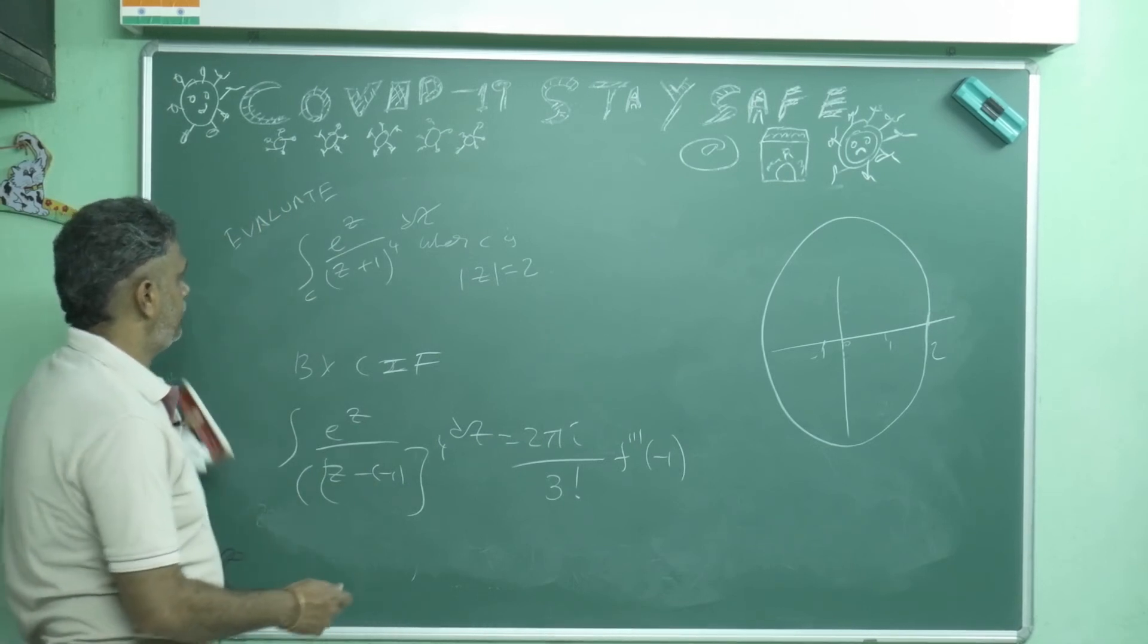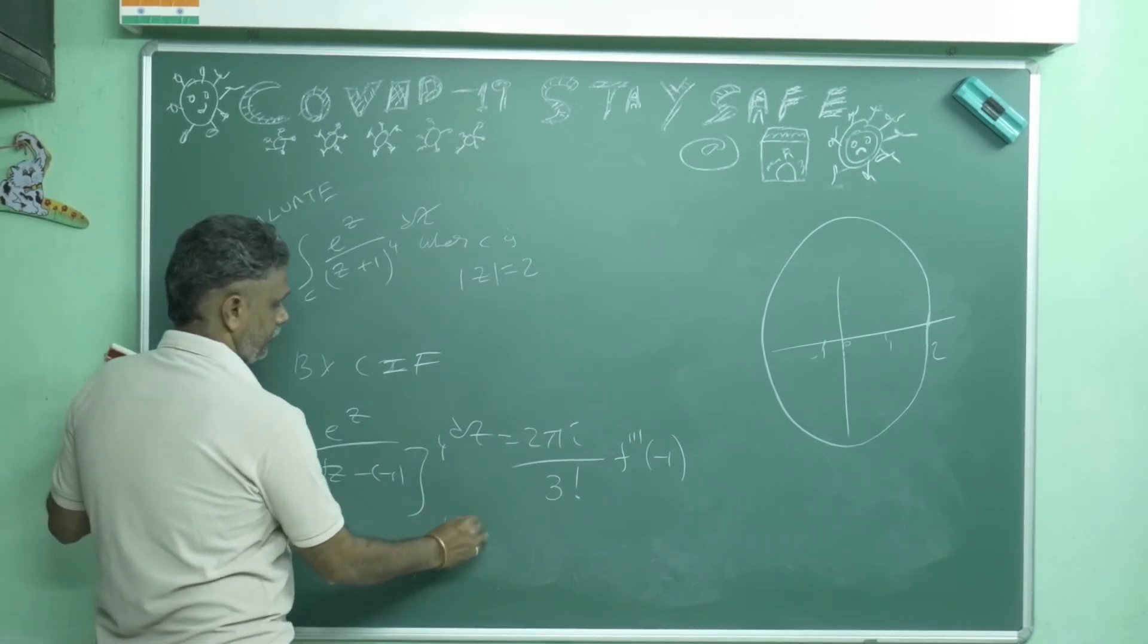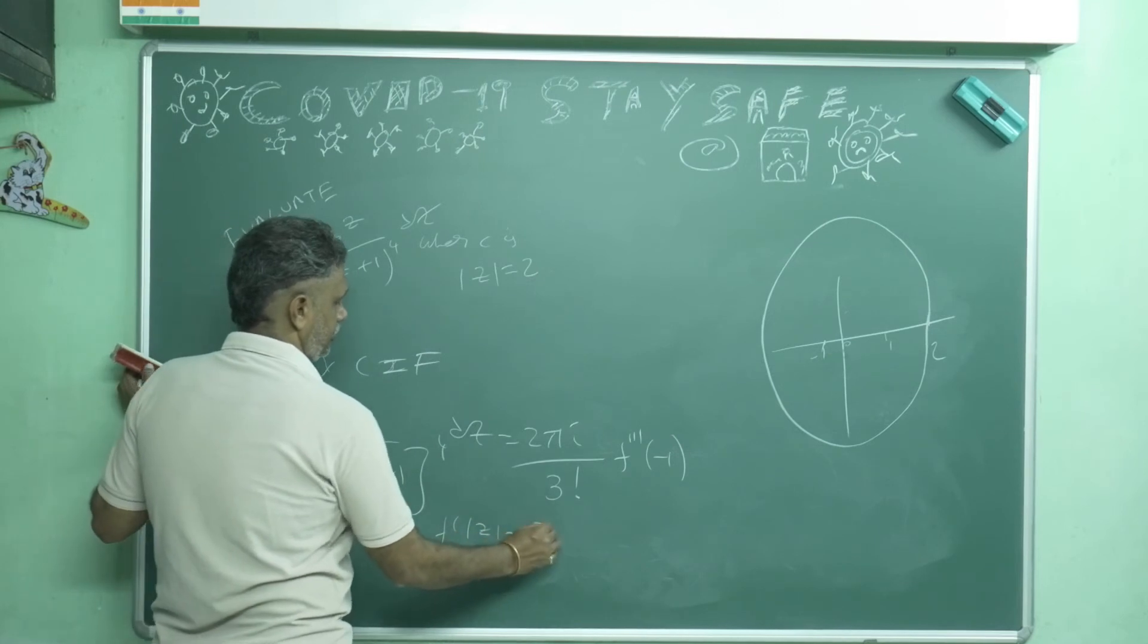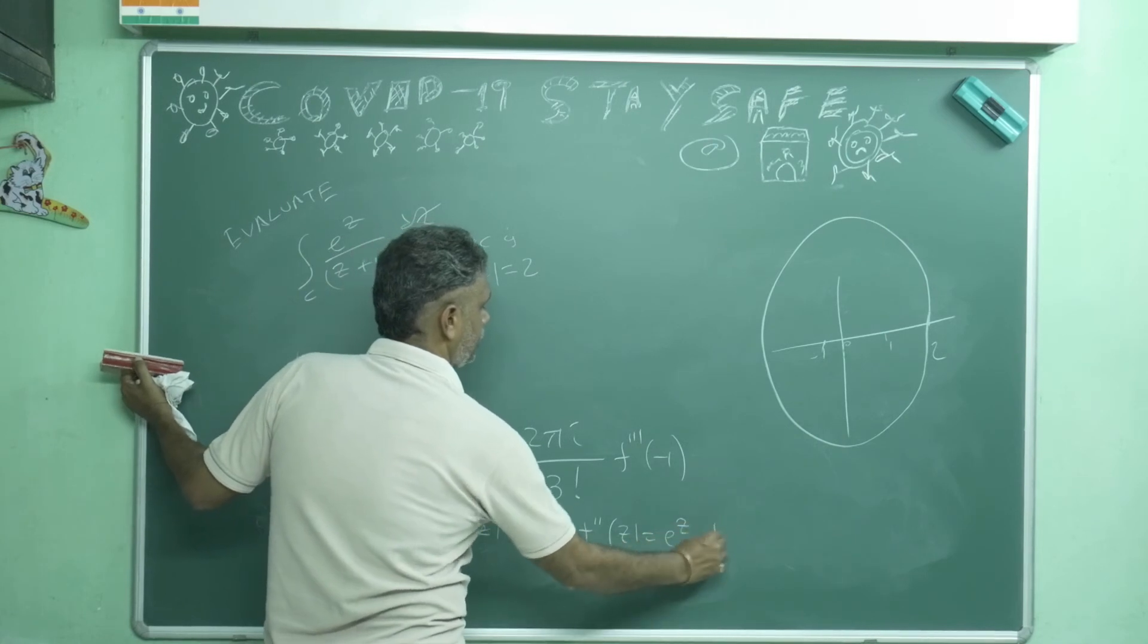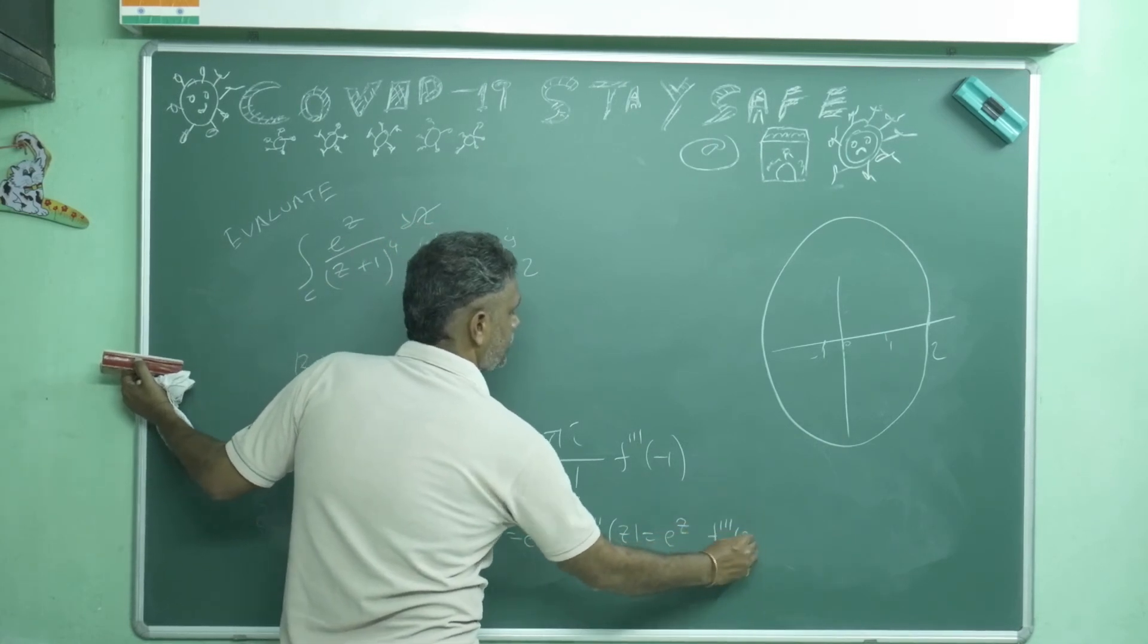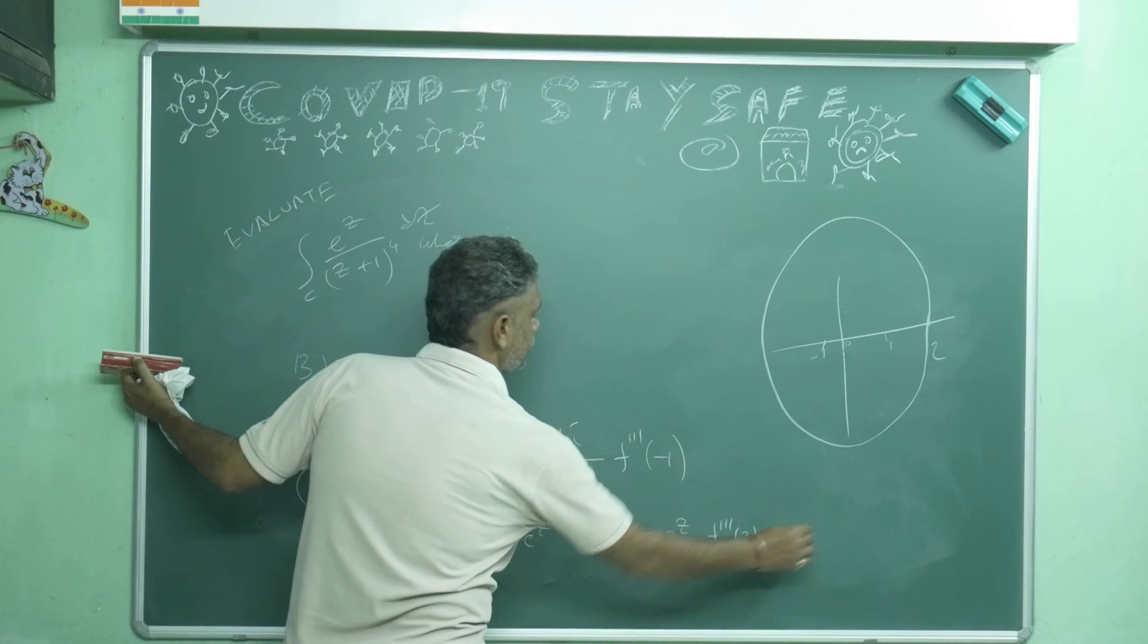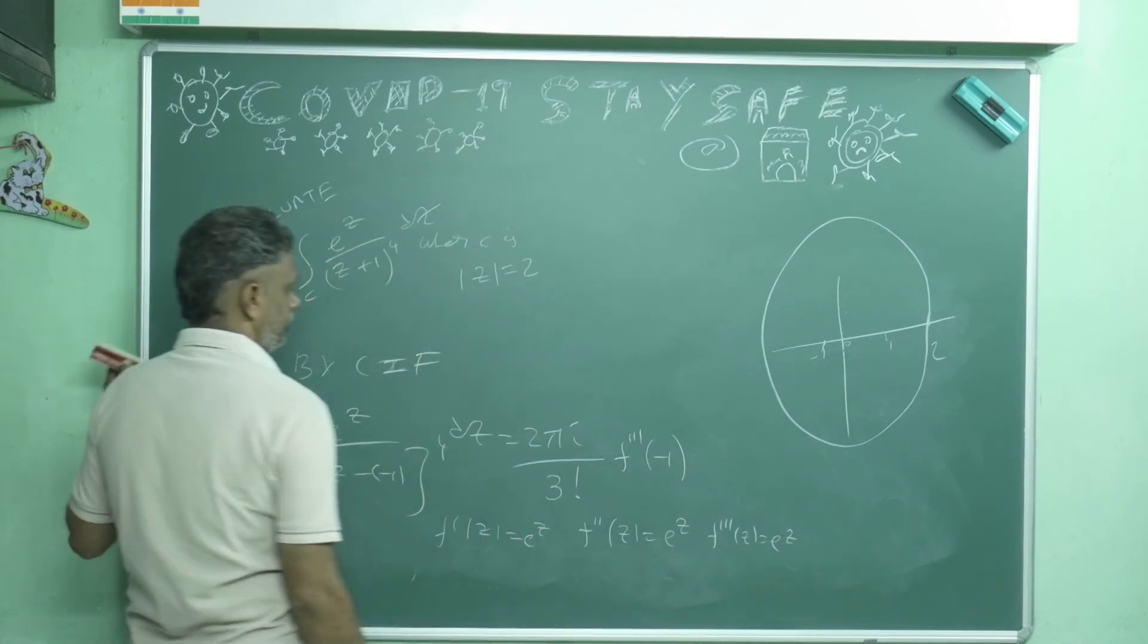Now what you will get? f prime 3 means what? f dash z is e power z. f double dash z is e power z. f triple dash z is e power z. Then if you substitute minus 1, what you will get?